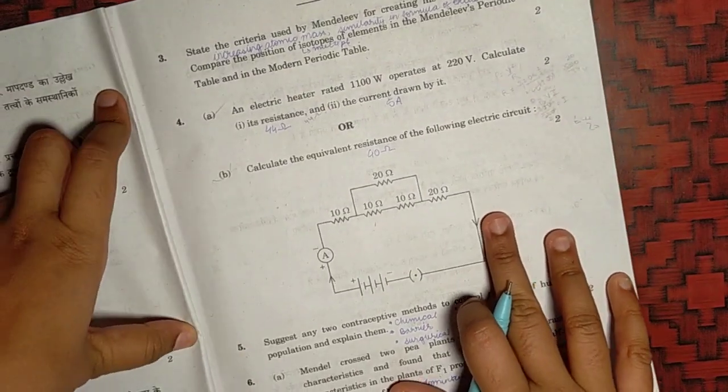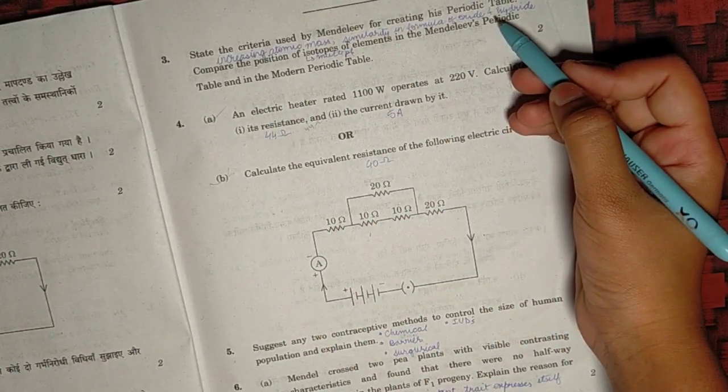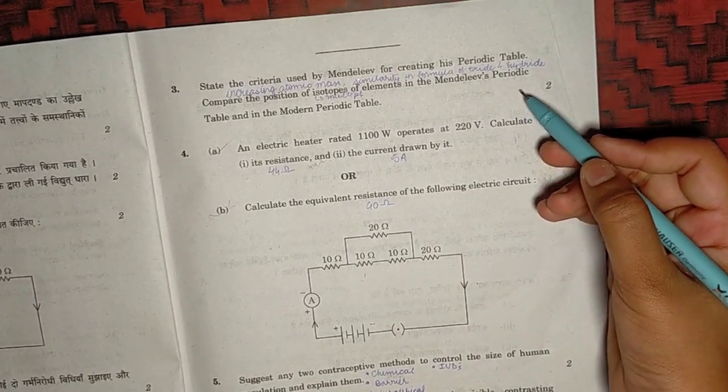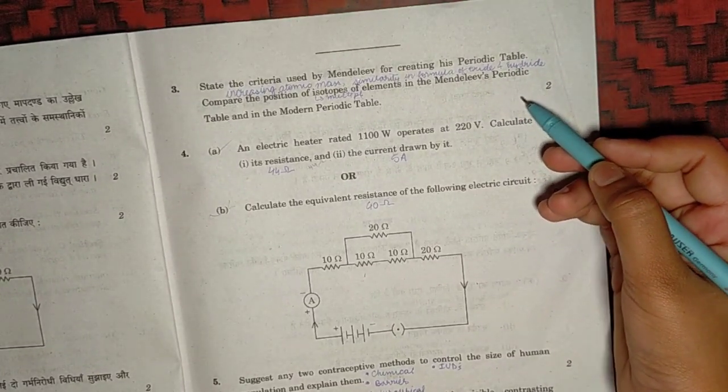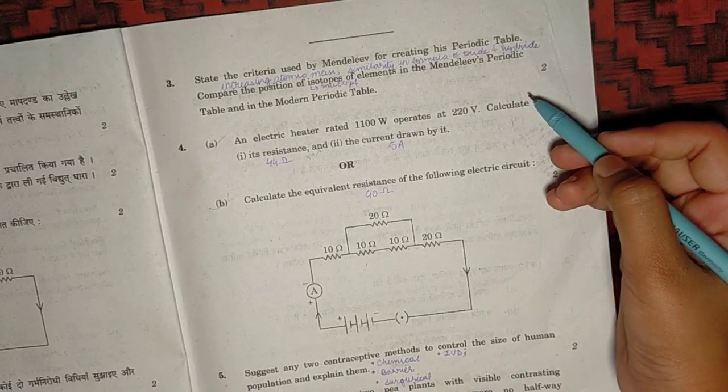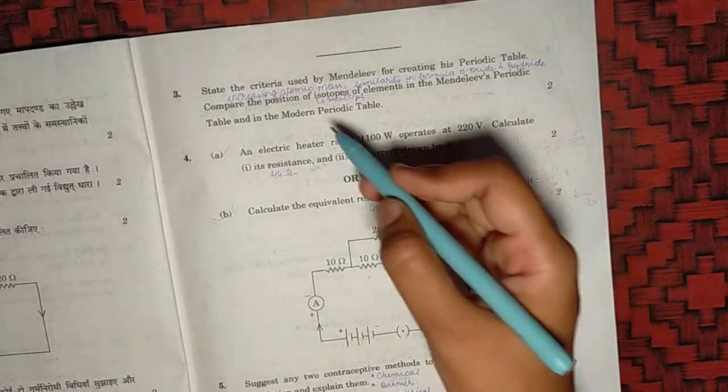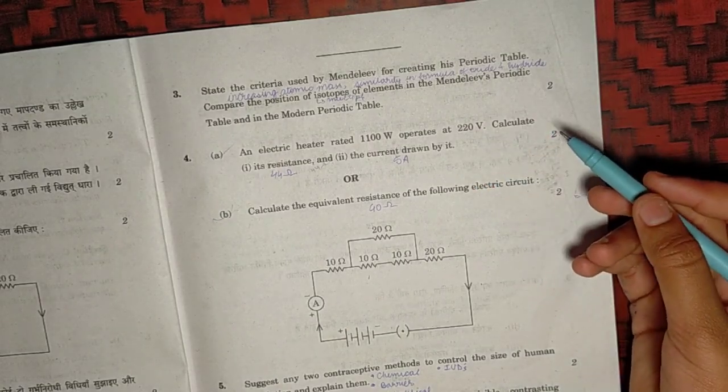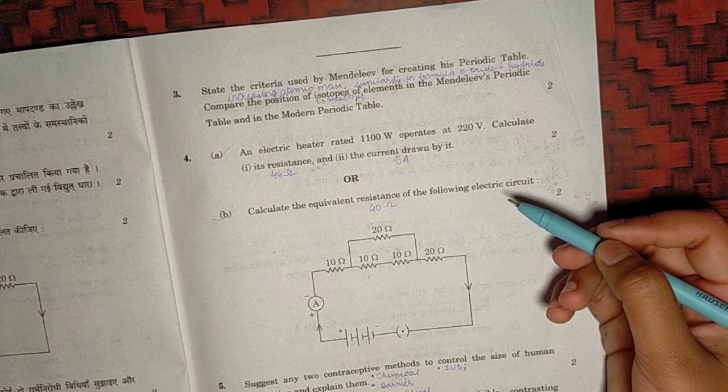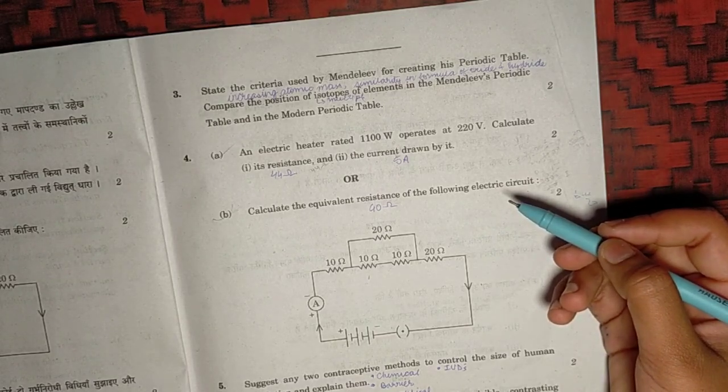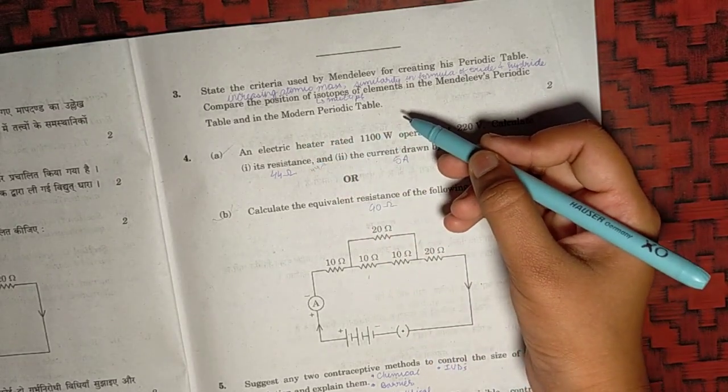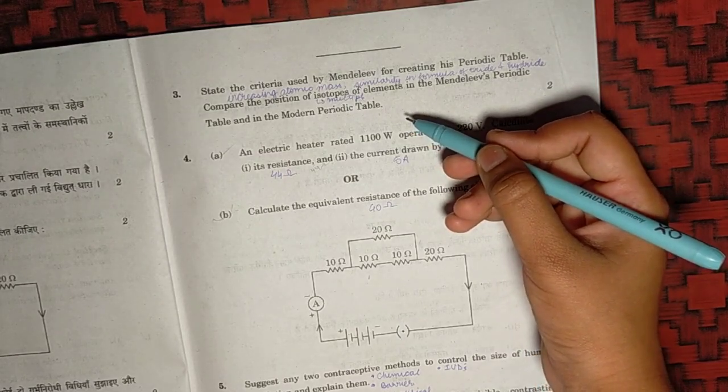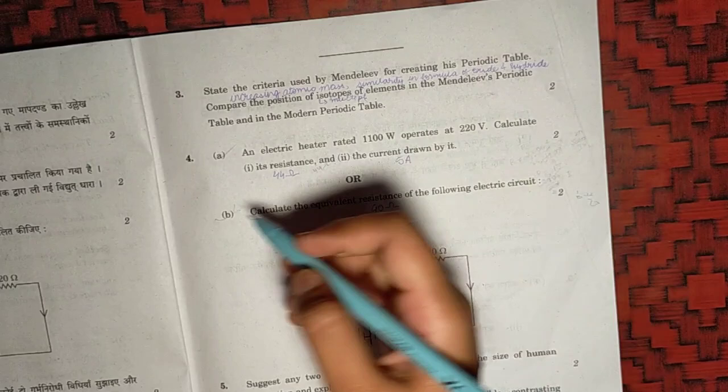Moving on to the third question, state the criteria used by Mendeleev for his periodic table. It will be increasing atomic mass and also he used the similarity of the chemical properties of the elements. So the similarity in formula of oxides and hydrides. The position of isotopes, as the Mendeleev periodic table was based on the increasing atomic mass. So the atomic mass of isotopes of elements are different, so they will have multiple positions. But as per in the modern periodic table, it is based on increasing atomic number. So only one fixed position will be there of an isotope.